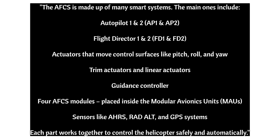The AFCS is made up of many smart systems. The main ones include: autopilot 1 and 2 (AP1 and AP2), flight director 1 and 2 (FD1 and FD2), actuators that move control surfaces like pitch, roll, and yaw, trim actuators and linear actuators, guidance controller, four AFCS modules placed inside the modular avionics unit (MAU), and sensors like AHRS, RAD-ALT, and GPS systems. Each part works together to control the helicopter safely and automatically.